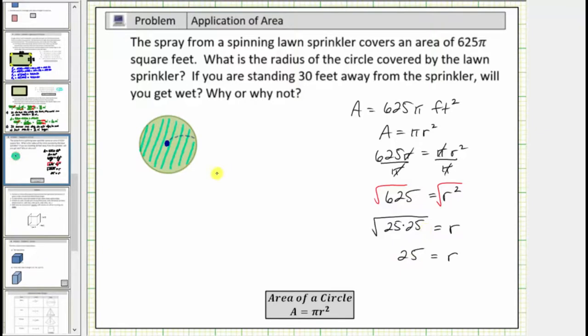So now we know the radius of the circle is 25 feet, which is the distance from the center of the circle to the edge of the circle, or the distance from the sprinkler to the edge of the circle that is being watered.